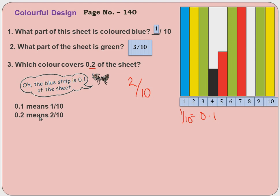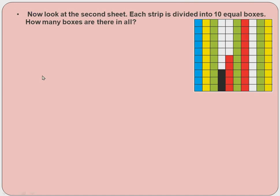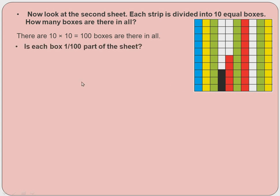0.2 means 2/10, so which colour has 2 parts? Yellow colour covers 2 out of 10 parts — yes, yellow. Now the second sheet has square boxes. Each strip is divided into 10 equal boxes: 1, 2, 3 … 10. Total boxes: 10 × 10 = 100 boxes. Each box is 1/100th of the sheet.